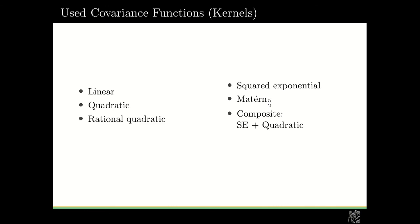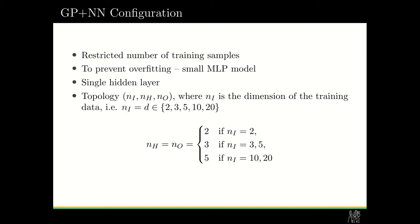So the configuration of the neural network. Because we had a restricted number of training samples, which was our goal to limit the number of samples, we decided to prevent the overfitting by using only a small multi-layer perceptron. We used only a single hidden layer and the topology is shown below.